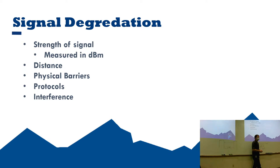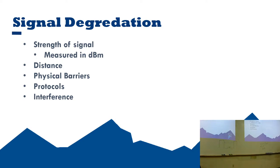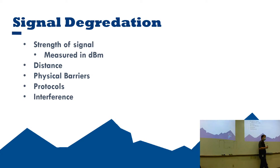Signal degradation: as you move further from the access point, signal strength decreases. Signal strength is measured in dBm — anything 70 dBm and above is probably not very usable, while 70 dBm and below should work fine. Most enterprise access points theoretically support 300 to 400 feet. Beyond that, a connection is unlikely. Very powerful access points can sustain connections for 1,500 feet, but those cost thousands of dollars and are not what you'd typically use.